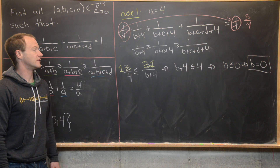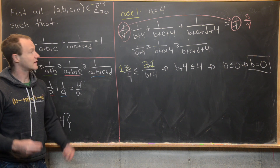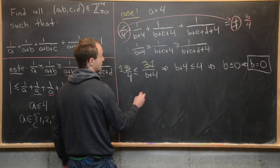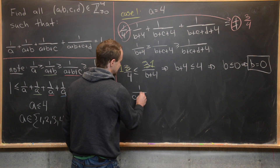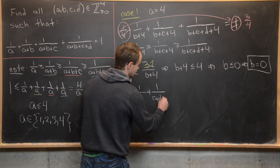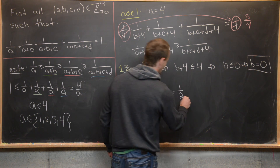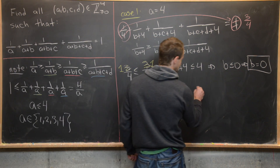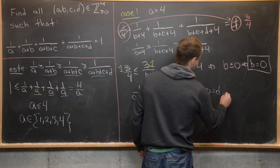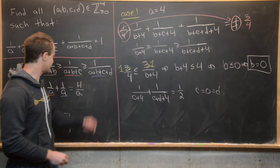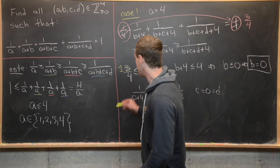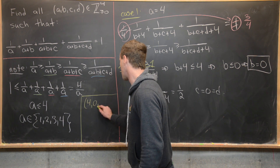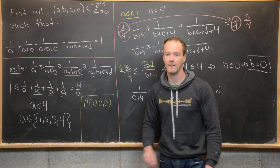With B = 0, the equation simplifies to: 1/(C+4) + 1/(C+D+4) = 1/2. Using the same strategy, we find C = 0 and D = 0 as well. So that gives our first solution: (A, B, C, D) = (4, 0, 0, 0).